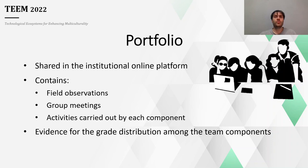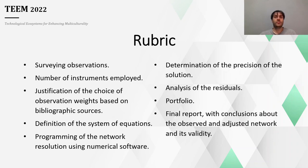The portfolio is the main instrument for assessing the transversal competence related to teamwork. It summarizes all the observations, group meetings and individual activities carried out. Moreover, the activity grading is carried out by the students themselves, who have to reach a common agreement. However, this decision has to be supported by the evidence collected in the portfolio. For the evaluation of the activity, a rubric will be used with the elements shown on the screen, which are linked to different competencies of the subject. Students will have this rubric as a guide from the beginning of the activity, together with the rest of the material of the subject.